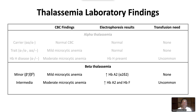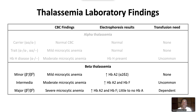Intermedia, or non-transfusion-dependent thalassemia, is characterized by moderate microcytic anemia. Hemoglobin electrophoresis shows increased hemoglobin A2 and hemoglobin F. Beta thalassemia major, or transfusion-dependent beta thalassemia, is characterized by severe microcytic anemia. Hemoglobin electrophoresis shows increased hemoglobin A2 with little to no hemoglobin A. These patients are transfusion-dependent.